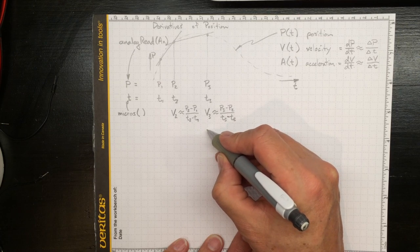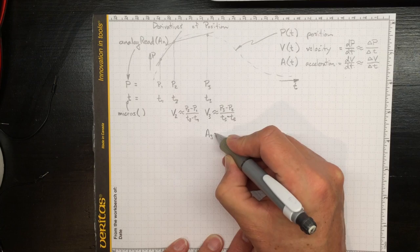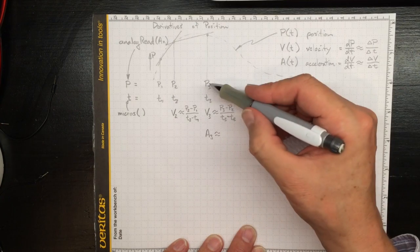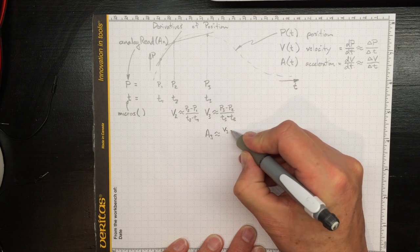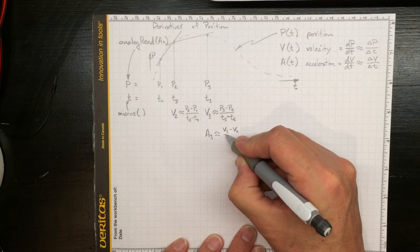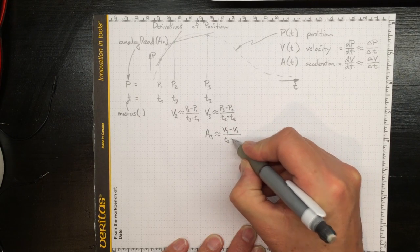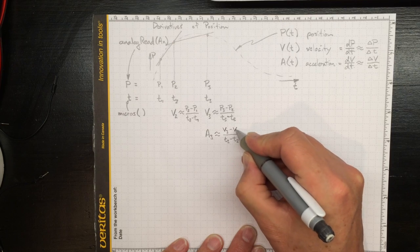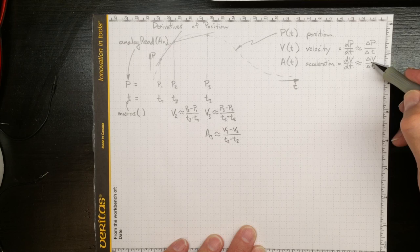Now we can estimate the acceleration at this time as being approximately equal to the velocity at time 3 minus the velocity at time 2, divided by whatever t3 minus t2 was. So that's delta v over delta t, giving us an approximate value for the acceleration.